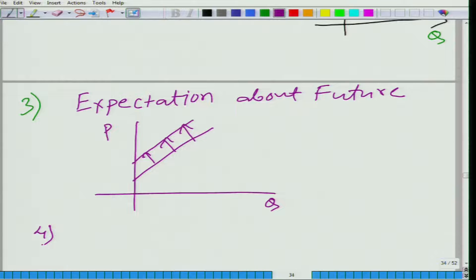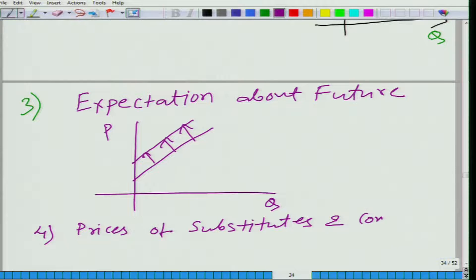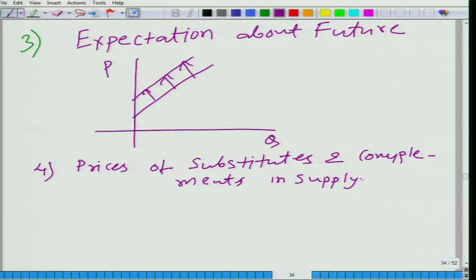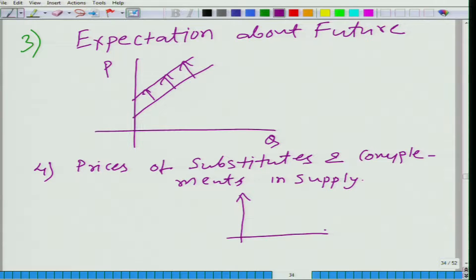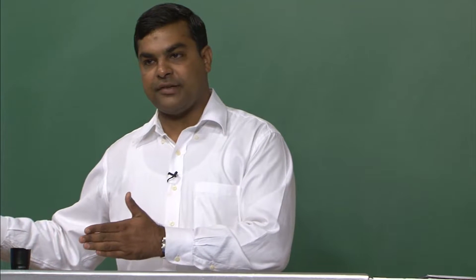Now let us look at the fourth factor: the prices of substitutes and complements in supply — not in consumption, but in supply. For example, from the airplane industry, Boeing produces both civilian aircraft and military aircraft, which are substitutes in production. If, for some reason, the price of military aircraft goes up, what will happen to the supply of civilian aircraft by Boeing? It will decrease, because Boeing will devote its resources to producing more military aircraft.